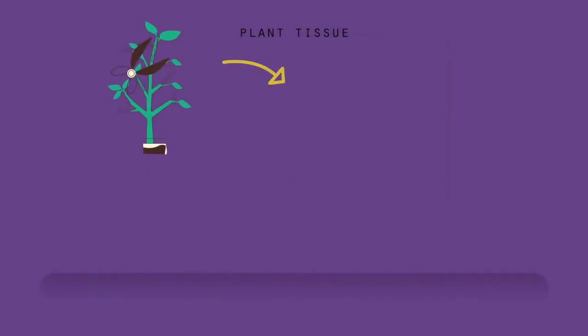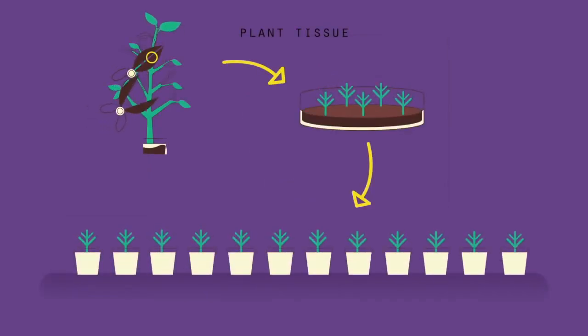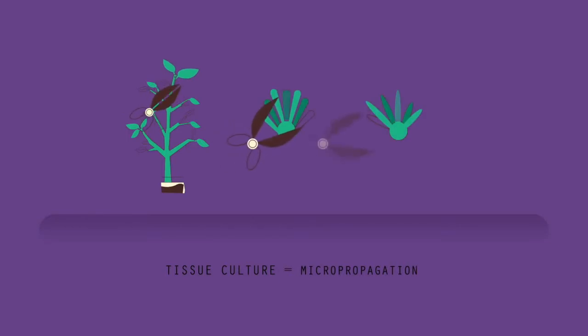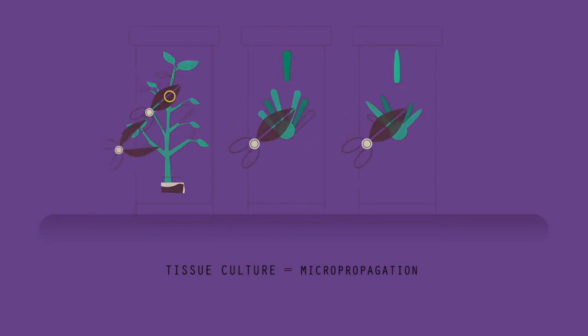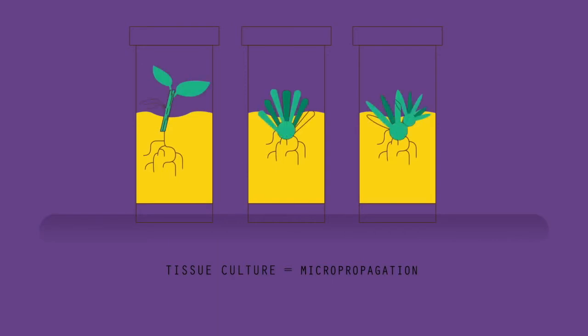However, you might want to produce hundreds of plants from only a small piece of plant tissue. To do this, another method called tissue culture, also known as micropropagation, is used. A few cells are taken from the parent plant and placed onto a nutrient jelly using antiseptic technique. This means making sure no microorganisms contaminate the jelly. The cells will start to differentiate and form new plants.